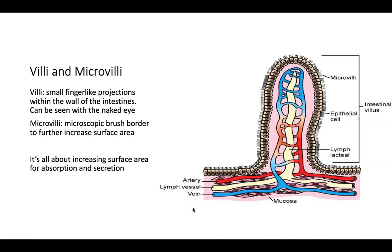To clarify villi and microvilli: villi are small finger-like projections within the wall of the intestines, visible with the naked eye. Microvilli are microscopic brush borders on the actual cells themselves, further increasing surface area. Both features are all about increasing surface area for absorption and secretion.